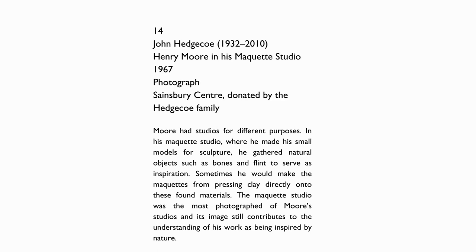Moore had studios for different purposes. In his maquette studio, where he made his small models for sculpture, he gathered natural objects such as bones and flint to serve as inspiration. Sometimes he would make the maquettes by pressing clay directly onto these found materials. The maquette studio was the most photographed of Moore's studios, and its image still contributes to the understanding of his work as being inspired by nature.